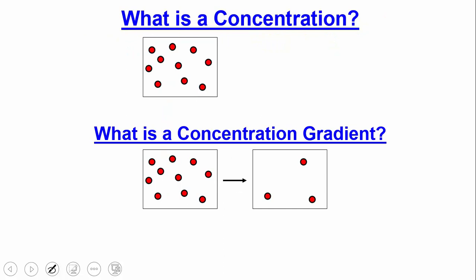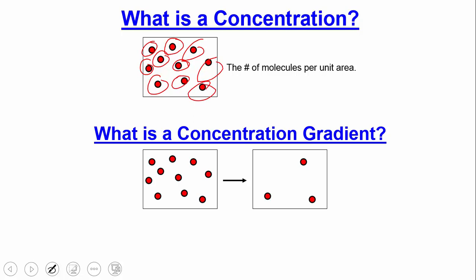Before we discuss diffusion, let's define a few terms. A concentration is the number of molecules per unit area — for example, ten molecules per box equals a concentration of ten molecules per unit area. A concentration gradient means you have two different regions separated by some type of barrier — in our case, the plasma membrane — with more molecules on one side than the other. That difference is the gradient.